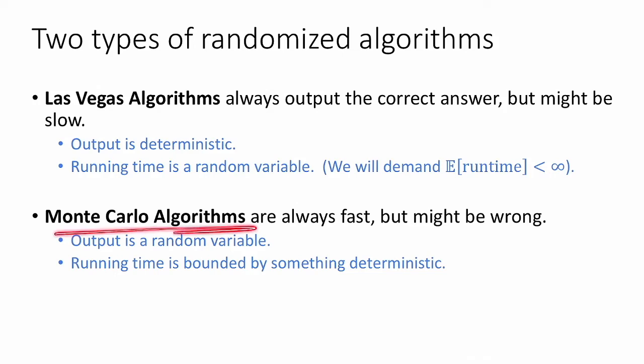In contrast Monte Carlo algorithms are algorithms that are always fast, but they might be wrong. So in this case the output is a random variable, it might be right or wrong, but the running time is deterministic, or at least is bounded by something deterministic. An example of a Monte Carlo algorithm that you might have seen before is Karger's algorithm for minimum cuts. And if you haven't seen Karger's algorithm before, we'll probably see it in a future video.